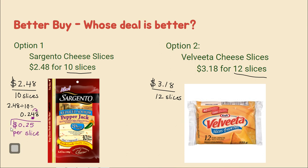You guys are going to have to be careful with your rounding. Make sure you underline that hundredths place, or where the pennies are. Look next door: 5 or more, raise the score; 4 or less, let it rest.